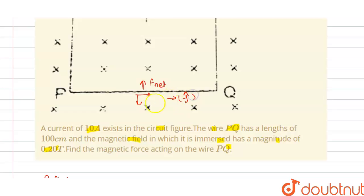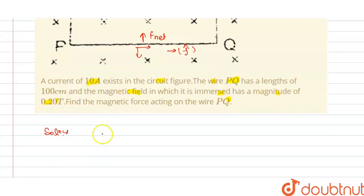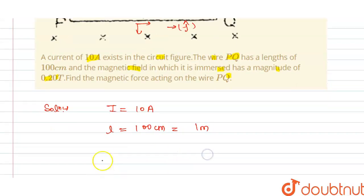So the solution of this question is: we have the current I = 10 ampere, and we have the length l = 100 centimeter, that is 1 meter.